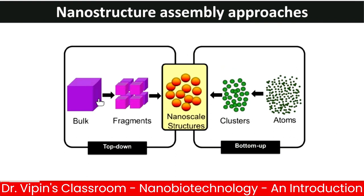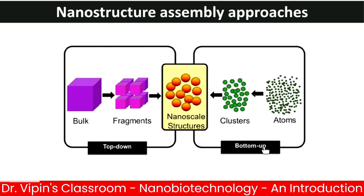One is the top-down approach where you start from the bulk material, break it down into fragments, and give the fragments the nanoscale size, stopping the reaction when the desired nanoscale size is achieved. The other is the bottom-up approach where you start at the atomic level, cluster atoms into the nano range, and stop the aggregation to allow for a nanoparticle of a specific shape and size.